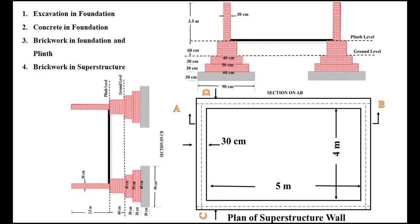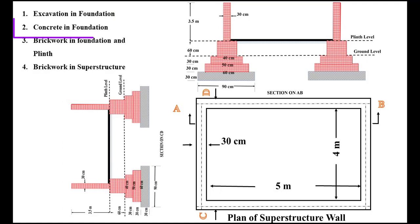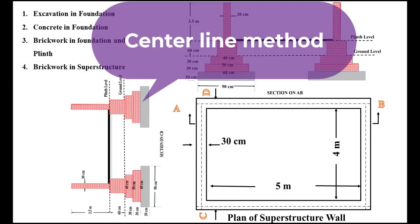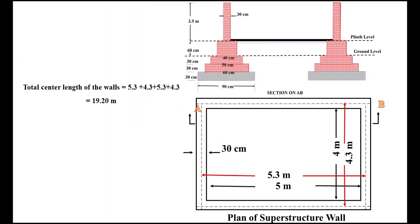From the given plan we need to find: earthwork in excavation, foundation concrete, foundation brickwork, foundation and plinth brickwork, and brickwork in superstructure — all using the centerline method. In the centerline method, we find all the centerline lengths of the given plan and add them together to get the total centerline length of the plan.